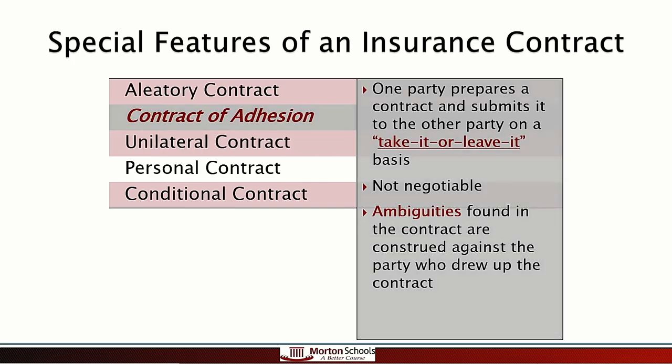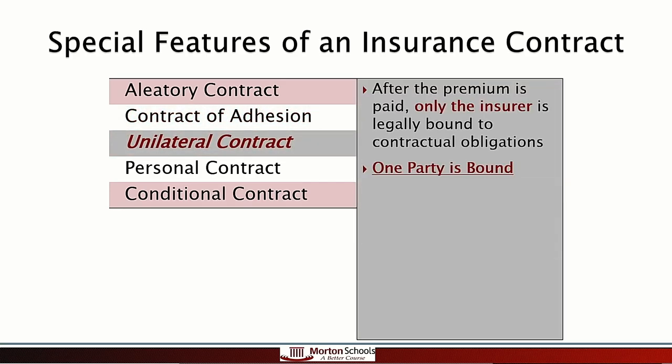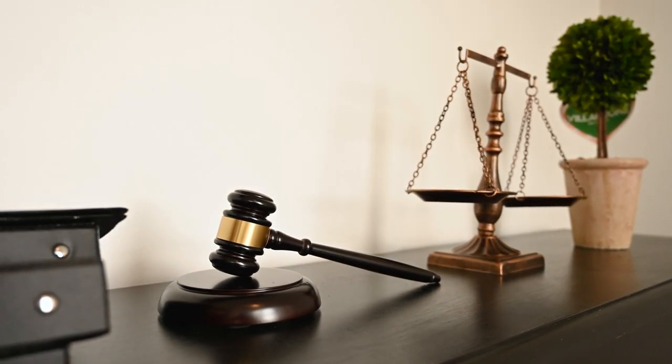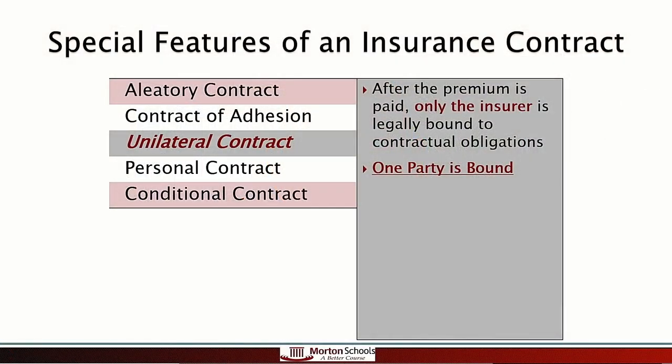The next term is unilateral. Unilateral means only one party is bound, and that one party is the insurer — the insurance company. You, the insured or policy owner, are not bound in that contract. That means only one party can be sued: the insurance company. If the insurance company doesn't pay a claim and you think they should, you can sue them. But if you don't make your premium payment, the insurance company cannot sue you, because it is a unilateral contract.